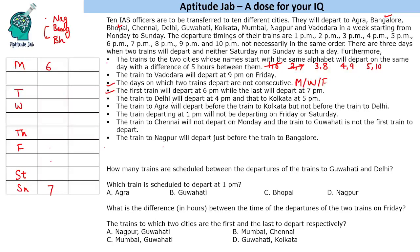Delhi departs at 4 PM, so 4&9 is not possible for Bangalore/Bhopal. Kolkata is at 5 PM, so 5&10 is also not possible. This means the pair must be 3 PM and 8 PM — Bangalore goes at 3 PM and Bhopal at 8 PM. This day cannot be Monday because one timing is already filled, and it cannot be Friday because Vadodara departs at 9 PM on Friday. So this day has to be Wednesday: Bangalore at 3 PM, Bhopal at 8 PM, and Nagpur on Tuesday.